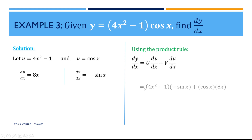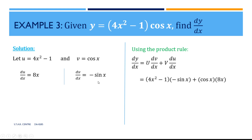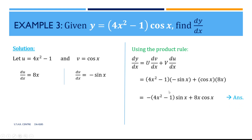Substituting into the product rule, we have u being (4x squared minus 1), times dv/dx which is minus sin x. It's important to use brackets here. Plus v, which is cos x, times du/dx which is 8x. Simplifying the brackets, bringing the minus to the front, we get minus(4x squared minus 1)sin x plus 8x cos x. We could also distribute the minus sign to get minus 4x squared plus 1, but that's not necessary. This is the final answer for example 3.